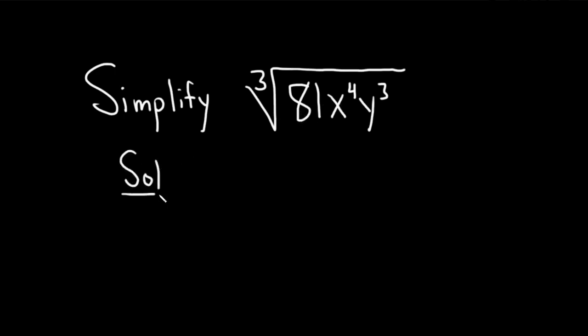So solution. We can write 81 as 3 to the 4th. This becomes 3 to the 4th. And here we have x to the 4th, and we have our y cube.